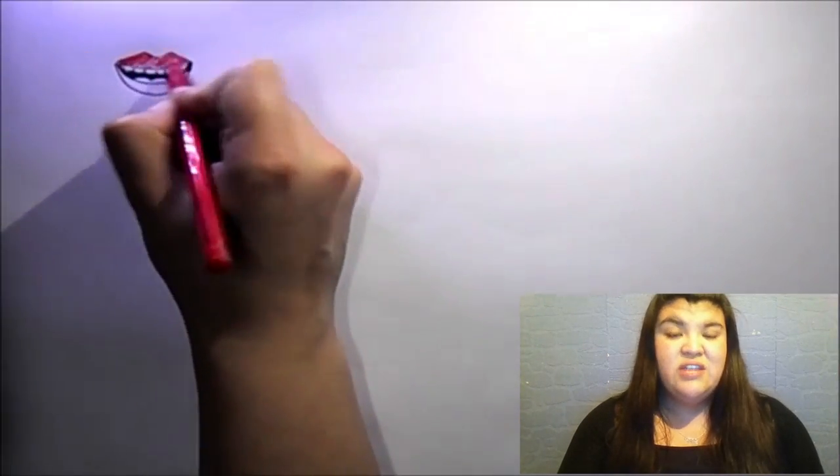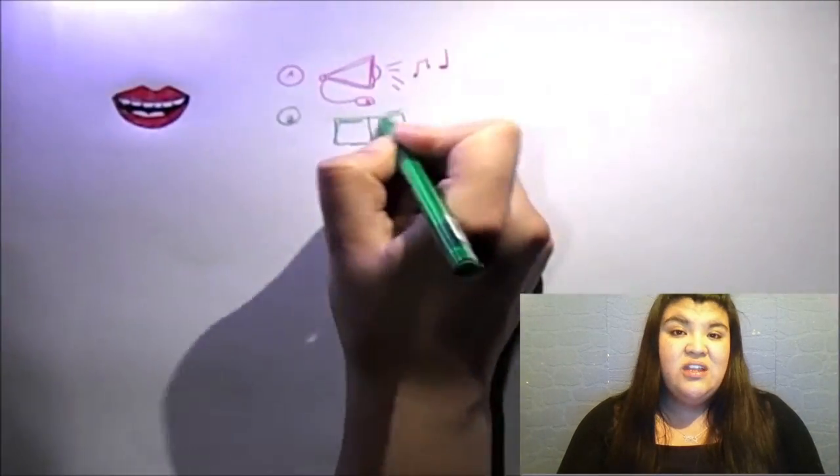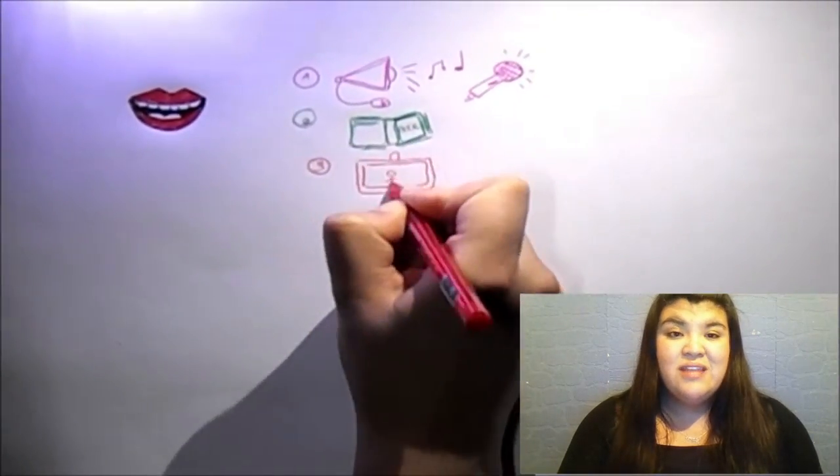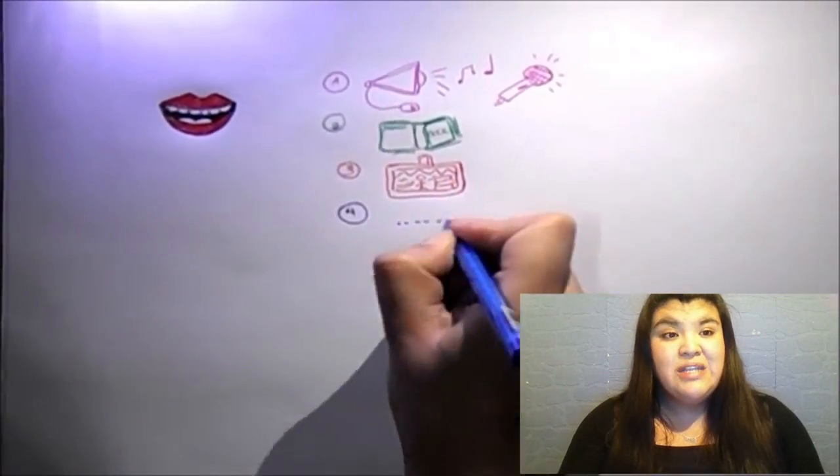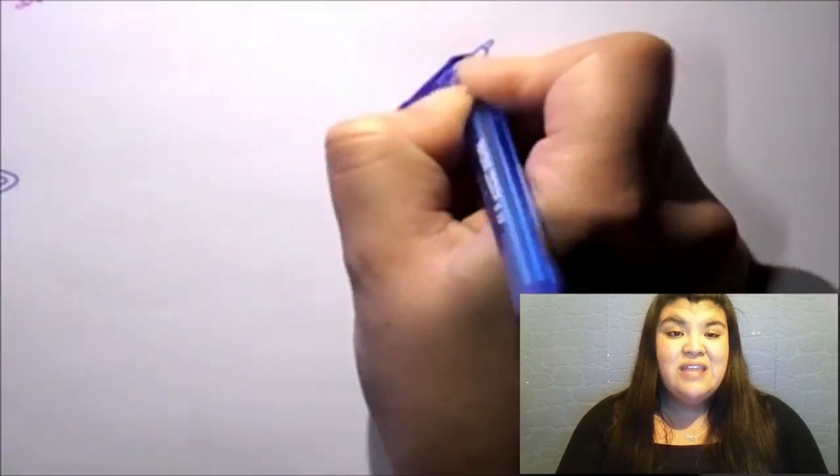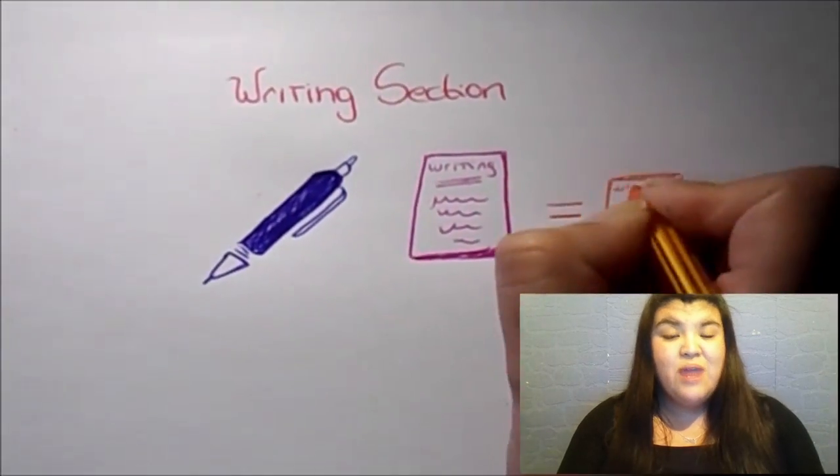PTE is divided into four sections, speaking, writing, reading, and listening. The speaking section is divided into five parts as it follows: read aloud, repeat sentence, describe image, retell lecture, and answer short questions. The writing section is divided into two parts: summarize written text, and write essay.